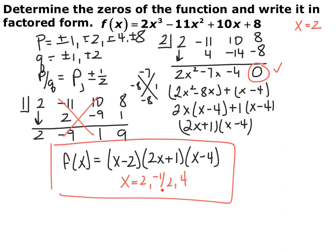If you had tried negative one-half or 4 in your synthetic division, those also would have given a remainder of 0 — there are multiple ways to approach it. The biggest thing is starting with your p's, finding factors of the constant term — p is like a period, it comes at the end. Your q's are factors of the leading coefficient. Possible rational zeros are p's divided by q's, then guess and check. As you reduce, your new constant term narrows possibilities: for instance, if 8 is not a factor of the new term, that option can be eliminated.